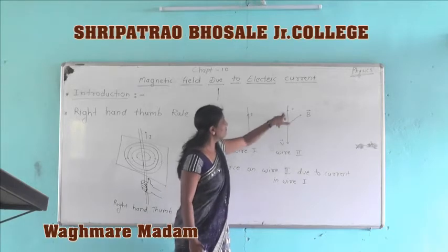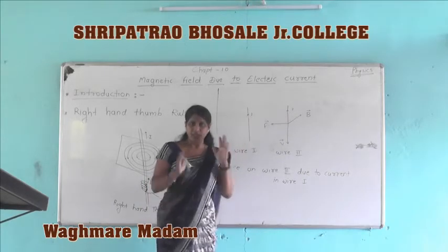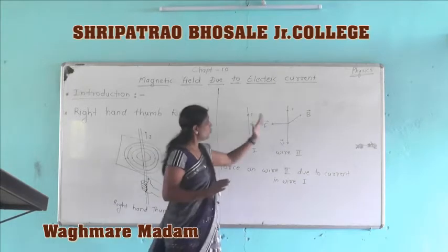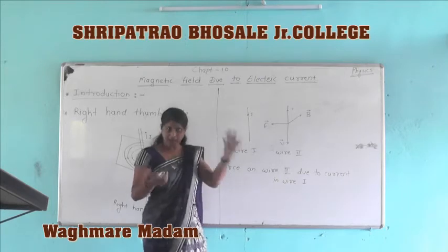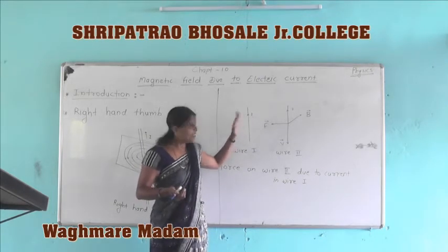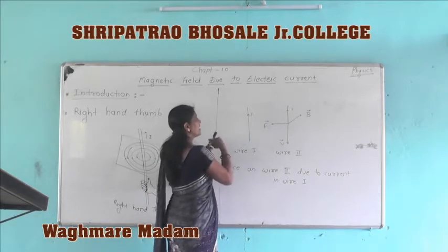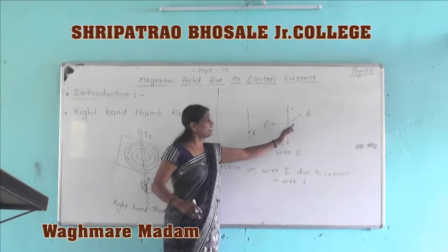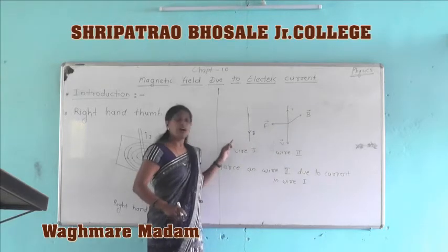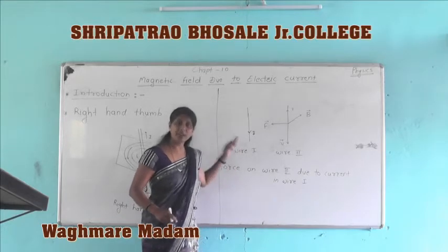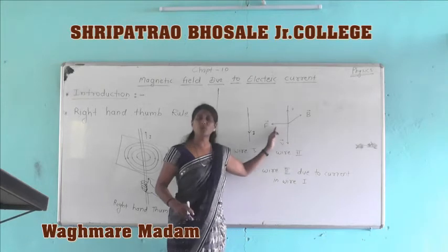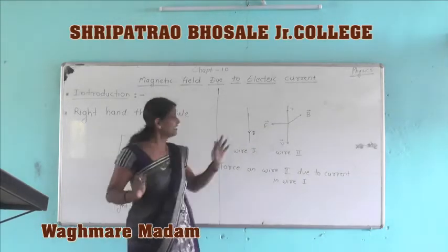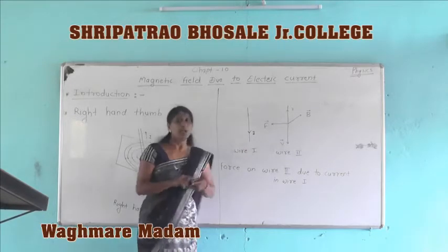Therefore we can say the force acting on wire second is towards wire first, and this wire will attract towards wire first. Similarly, wire first is placed in the magnetic field produced by wire second, so wire first also attracts towards wire second. If the direction of current in both wires is the same, then these two wires will attract each other.